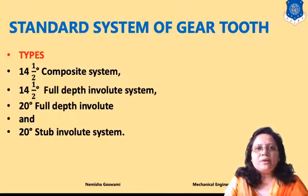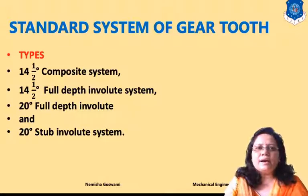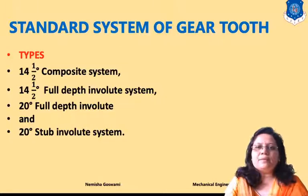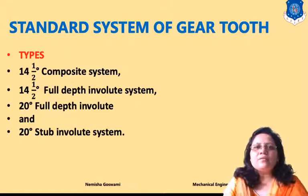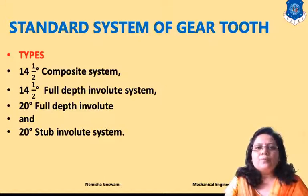The second standard system is the 14 and a half degree full depth involute system. The third is the 20 degree full depth involute system, and the fourth is the 20 degree stub involute system. These are classified on the basis of gear profile with respect to pressure angle: 14 and a half degrees and 20 degrees.